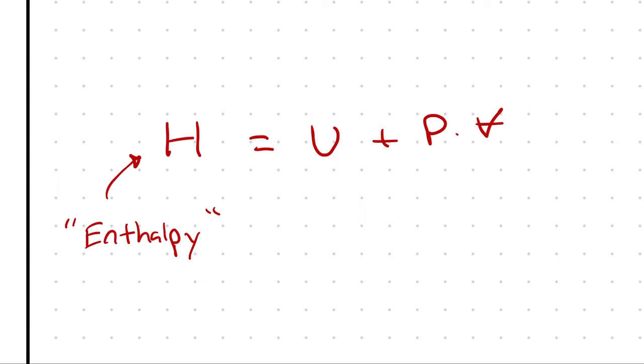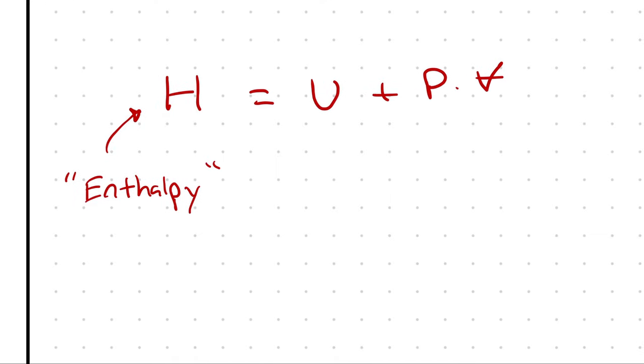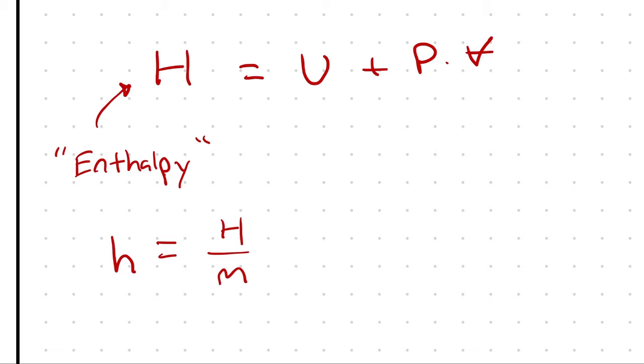Furthermore, in some cases, it is useful to express this as a specific quantity, which would be specific enthalpy. That would be total enthalpy divided by mass, like any other specific property that we use. And if we divide that entire phrase by mass, we would get specific internal energy plus pressure times specific volume. That's our representation for enthalpy.